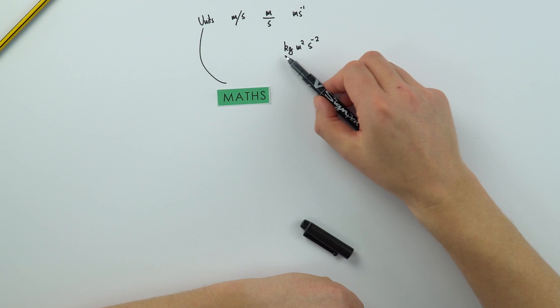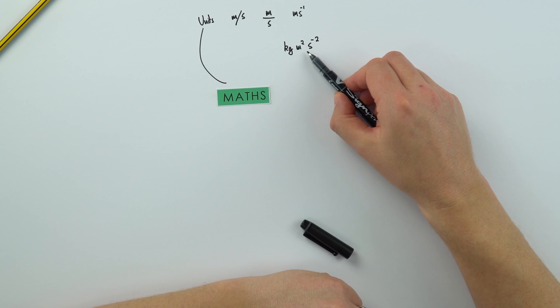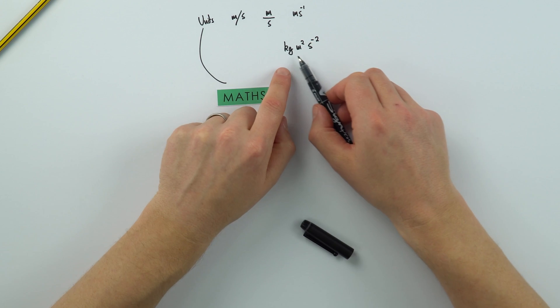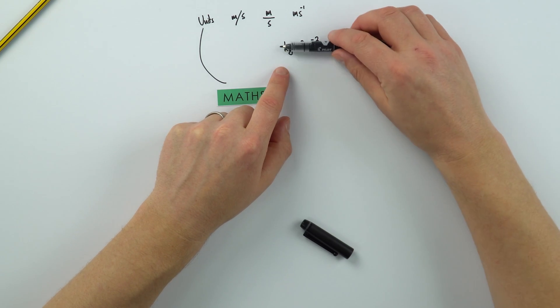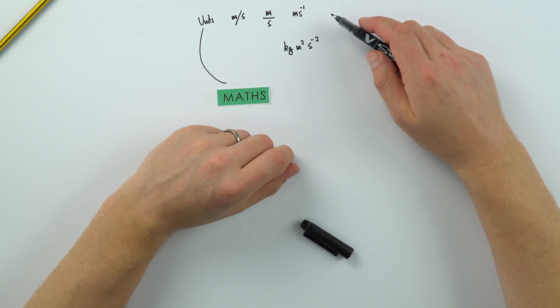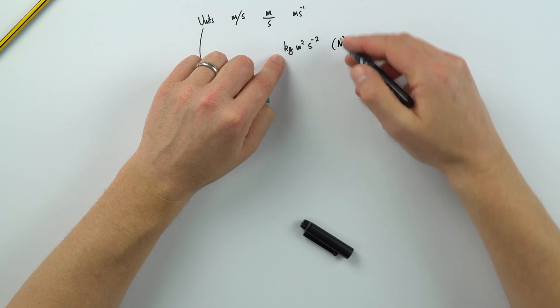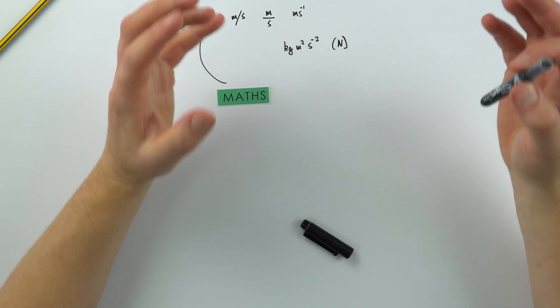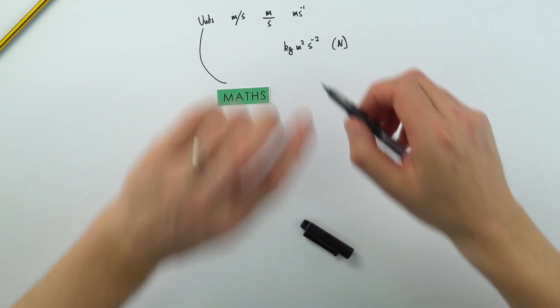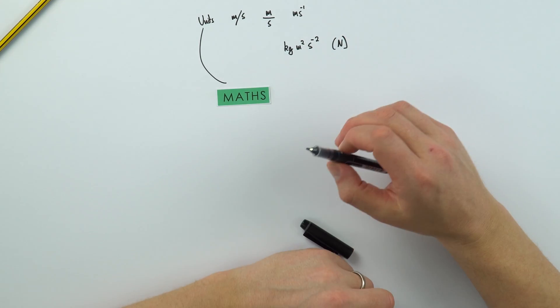Now ultimately, the reason we do this is to make things as simple as possible. Later on, we might have units of kilogram metre squared s to the minus two. We can see that if we were to start writing this on different lines, it might get really confusing. Actually, something like this is also called the Newton. And that makes it a bit more simple because this is one of our derived units from these base units. But we'll cover that as we go into the A-level course.